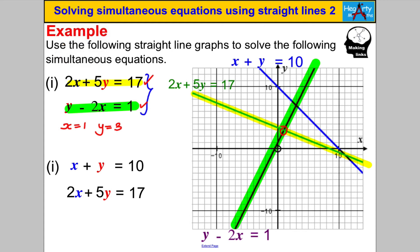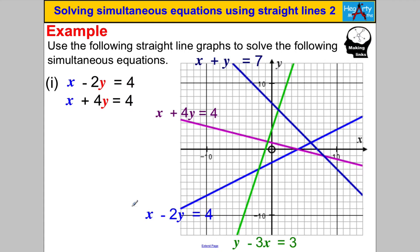Let's try the next one: x + y = 10. That is the blue line here. I'm solving it simultaneously with 2x + 5y = 17, the green line. Where the green line and the blue line intersect gives x = 11, y = −1. Let's check: 11 + (−1) = 10 ✓. 2×11 = 22, 5×(−1) = −5, and 22 − 5 = 17 ✓. This skill is very easy — just identify the lines and see where they intersect.